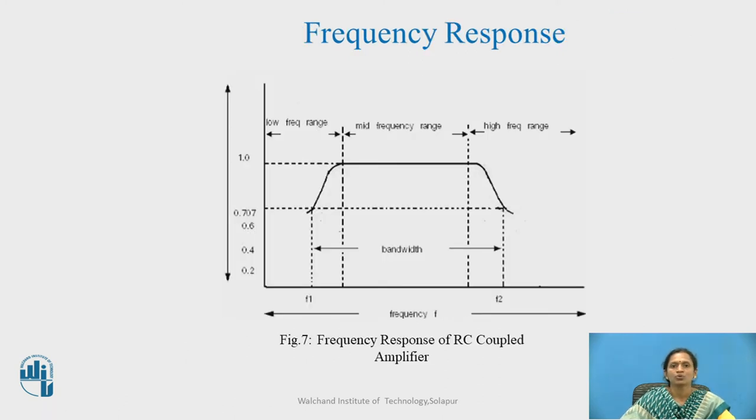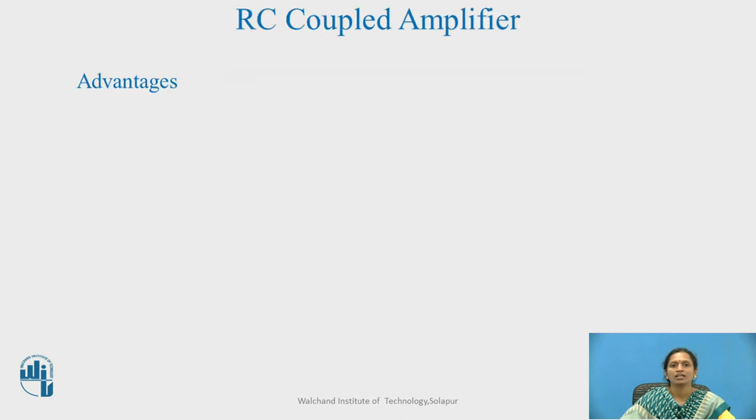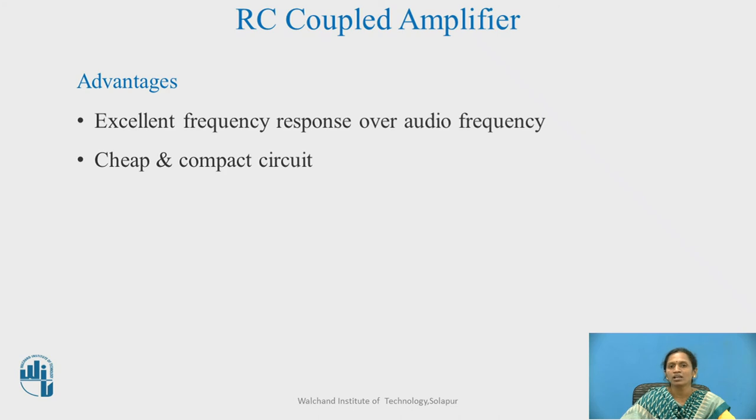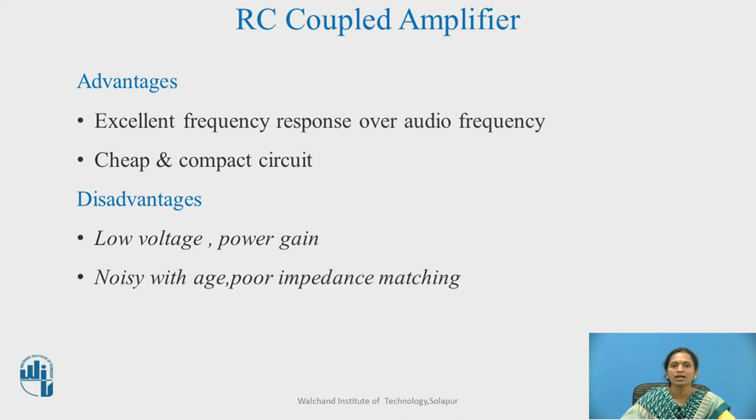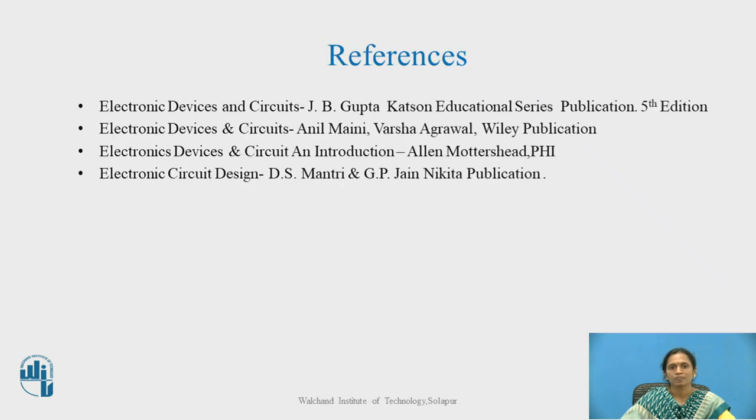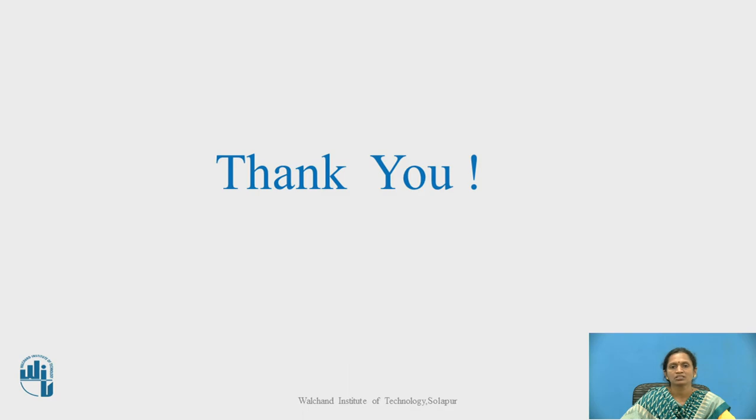This is the frequency response over the mid range and high and low frequency range. The advantages are that we have the excellent frequency response over audio frequency which is giving the cheap solution. The disadvantages are lower voltage and power gain as well as noisy because we are using resistor and capacitor which also gives the poor impedance matching. It is used in the public address system. These are the references. Thank you.